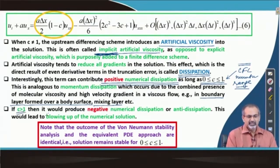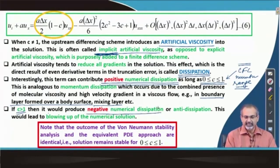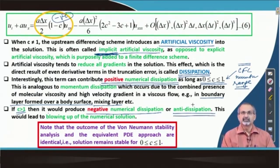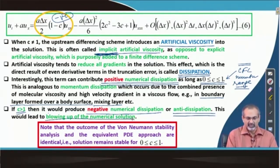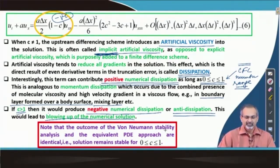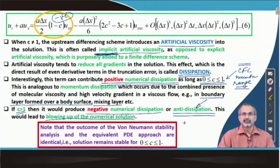If you have a situation in the first order upwind equation where c is greater than 1, that is going to create negative numerical dissipation — anti-dissipation — a phenomenon opposite to dissipation. This would lead to blowing up of the numerical solution: the slightest errors that build up in the solution would get amplified very severely and gradually the solution will go out of control. This is something one must avoid when proposing a numerical scheme to represent the linear wave equation in an approximate manner.